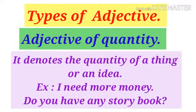The third kind of adjective is adjective of quantity. An adjective of quantity denotes how much or how many about a thing or an idea. For example, 'I need more money' — 'more' describes the quantity of money, so 'more' is the adjective of quantity.